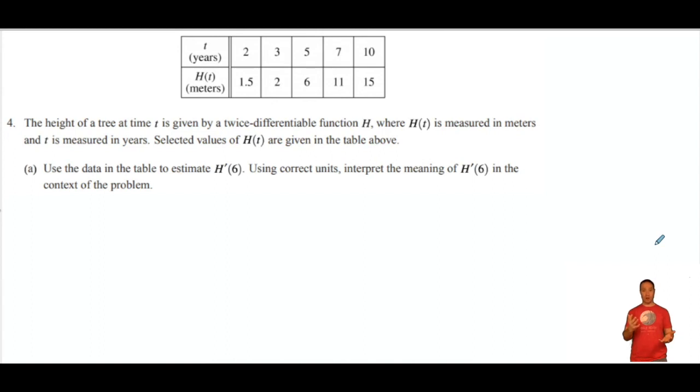Well, notice how convenient. 6 is not in our table. So we're going to estimate the derivative at 6 by finding the slope, the average rate of change between 5 and 7. So remember what slope is. Change in y over change in x. So I'm going to do 11 minus 6 divided by 7 minus 5, and I get 5 over 2.